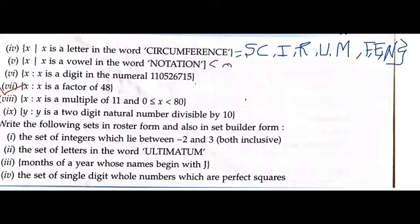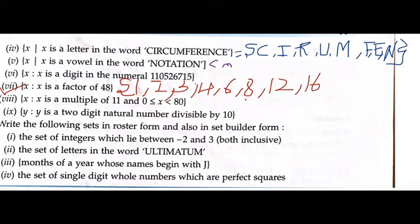Now question number 7: x where x is a factor of 48. What are the factors of 48? Let's start from 1. Since 48 is an even number, 2 will also be a factor. Then 3, we can divide 48 by 3, then 4, 6, 8, 12, 16, and 24. And in the end, 48. Every number is a factor of itself. 1 and the number itself are always factors. Close the bracket. So these are the different factors of 48.